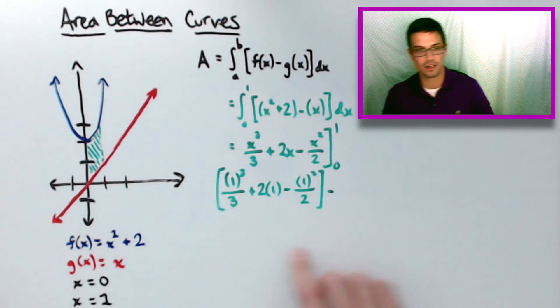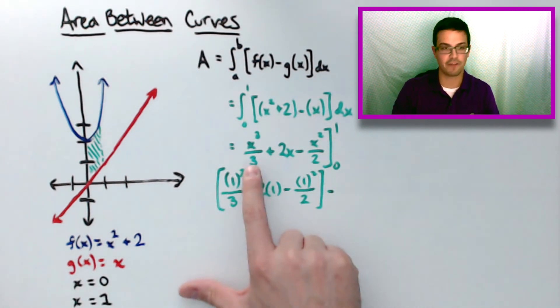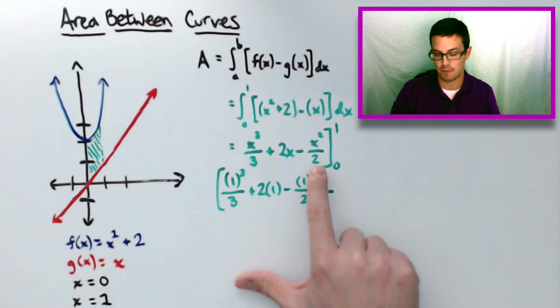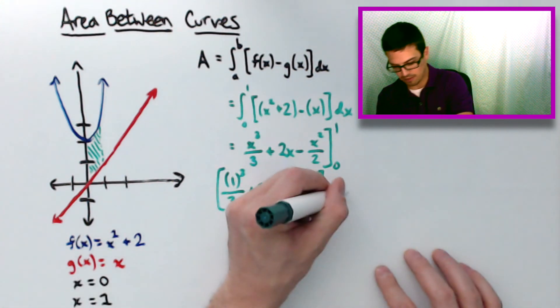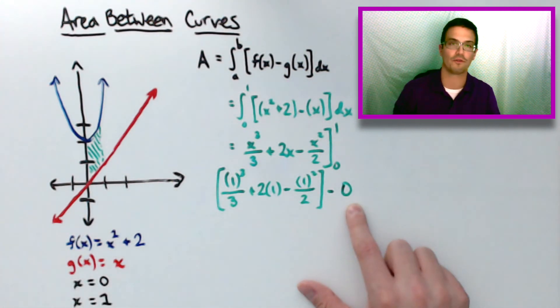And then we're going to subtract when 0 is plugged in. Well, if you plug 0 here, you'll get 0 cubed over 3, which is 0, plus 2 times 0, which is 0, minus 0 squared over 2, which is 0. So really this ends up just being 0 over here that we're subtracting.